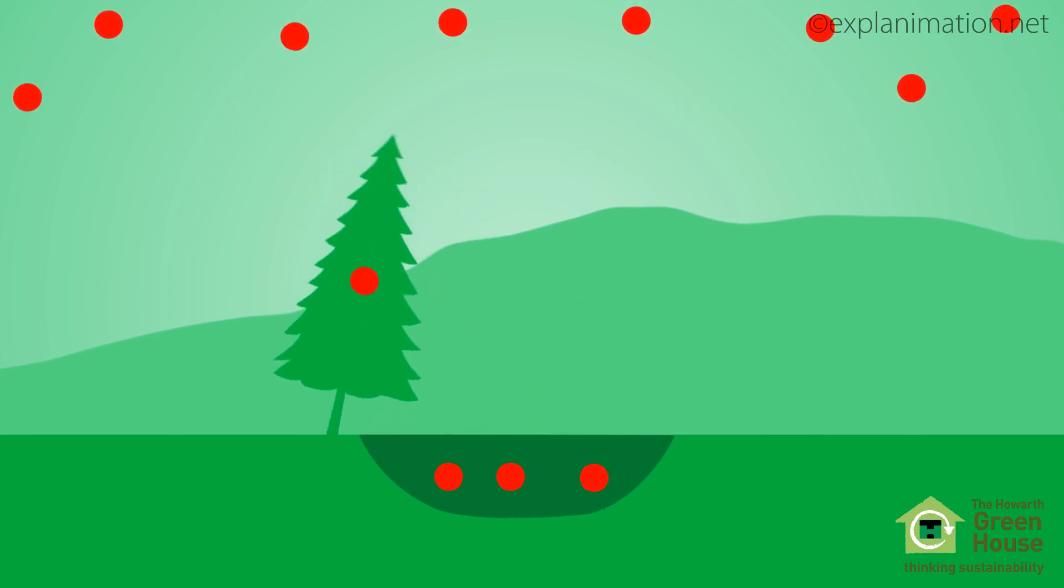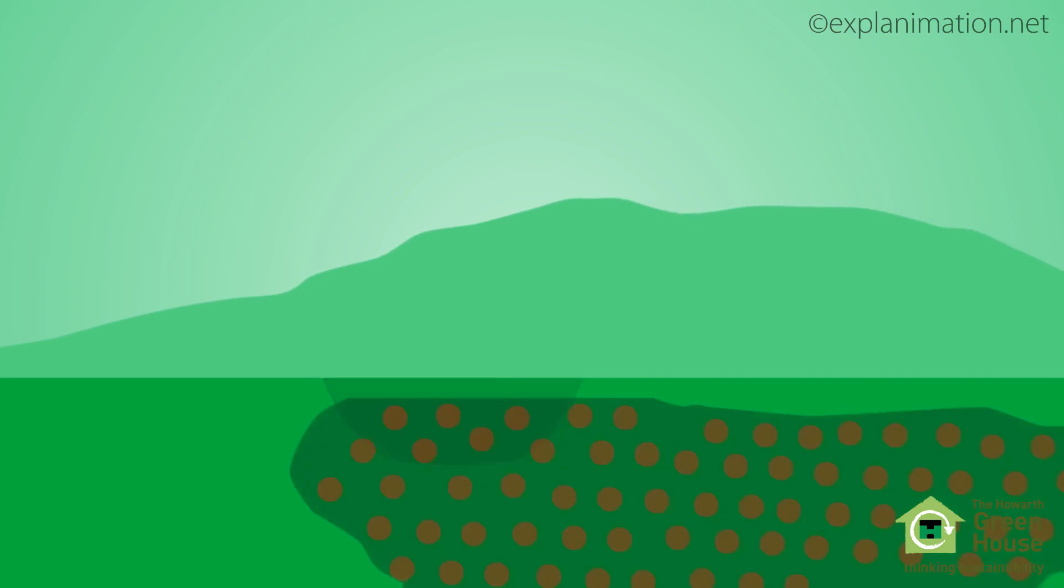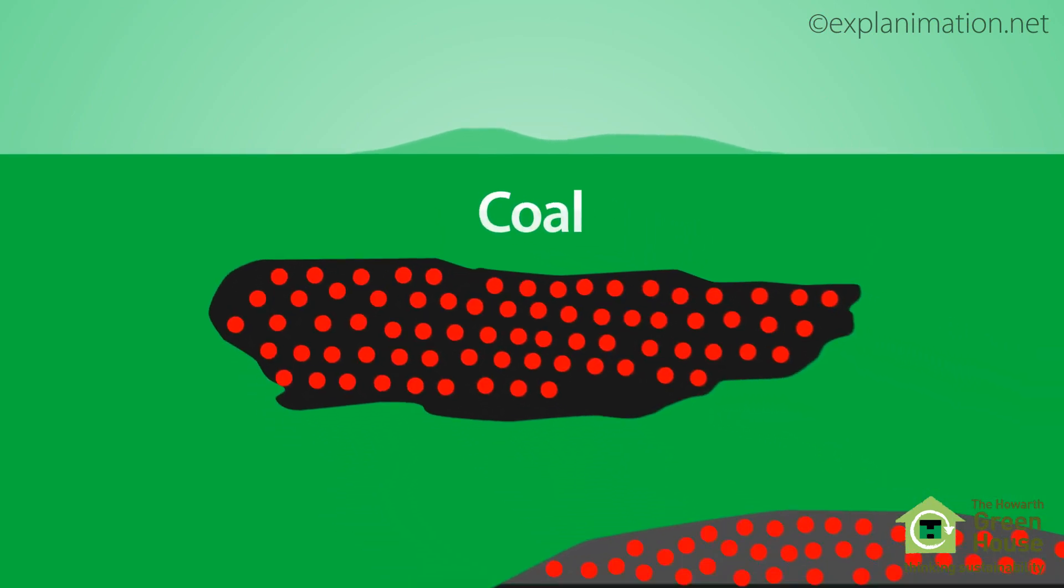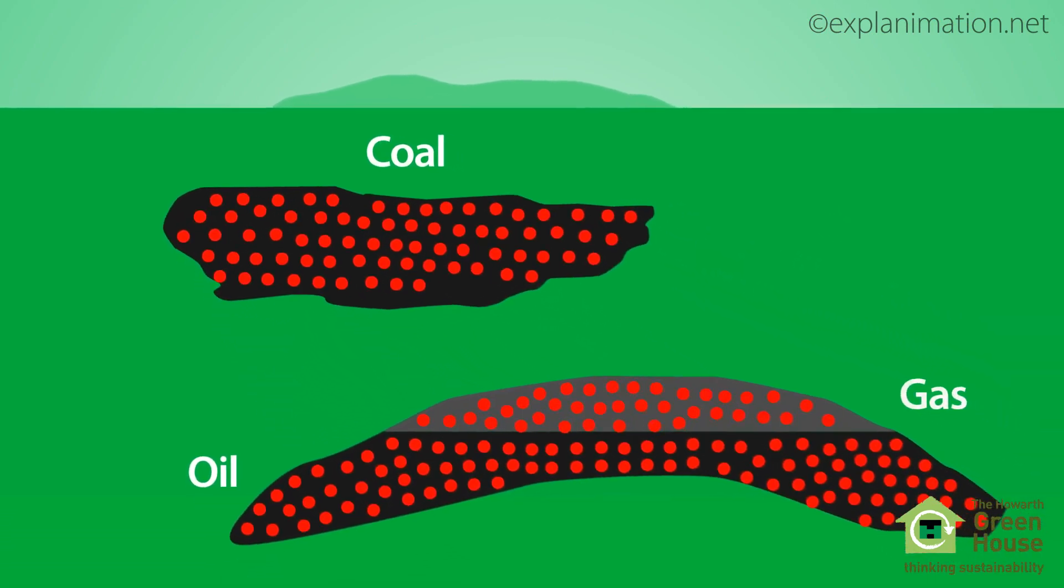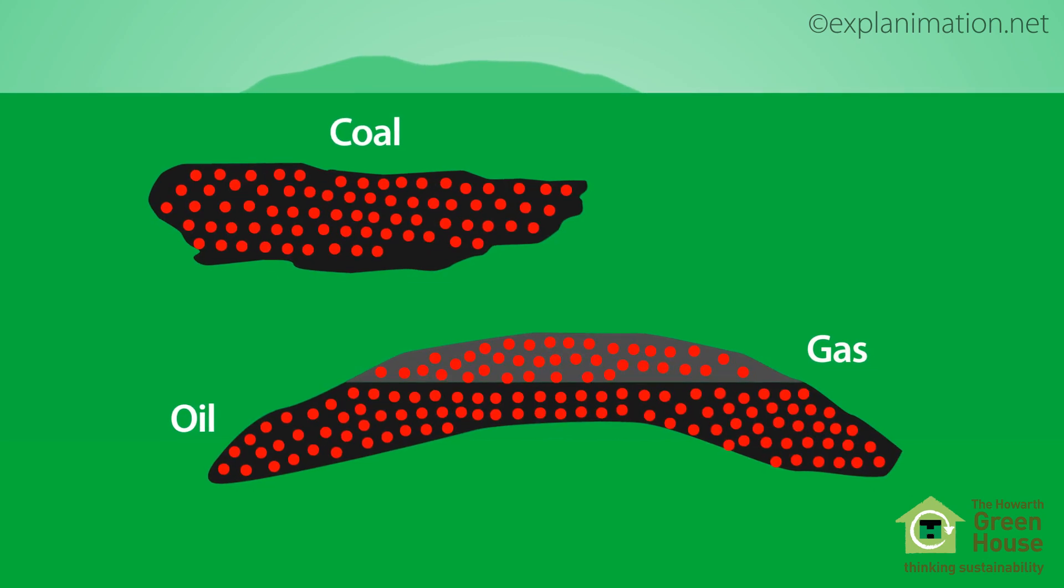Over millions of years, these buried layers of vegetation are compressed and transform into either coal, oil or natural gas. The carbon that was removed from the atmosphere is effectively locked underground.